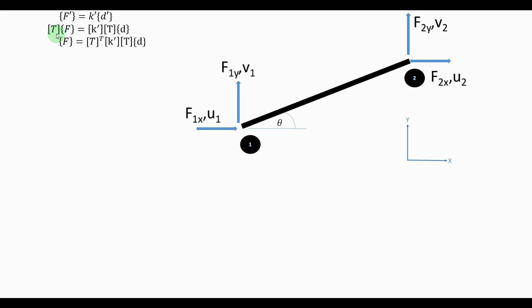And then again we multiply from the left with T inverse which gives F and T transpose K accent T.